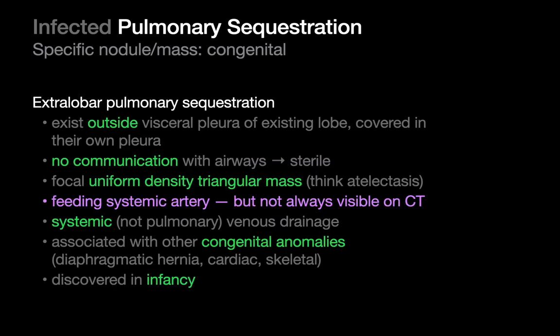Extralobar sequestrations are a little different. They exist outside the visceral pleural envelope of an existing lobe, covered with their own pleura, and share no communication with the rest of the tracheobronchial tree. So effectively, they don't communicate with the outside environment — they're more likely to be sterile and less likely to become infected. Because they have no communication with the tracheobronchial tree and have no air supply, they'll look like atelectatic lung.